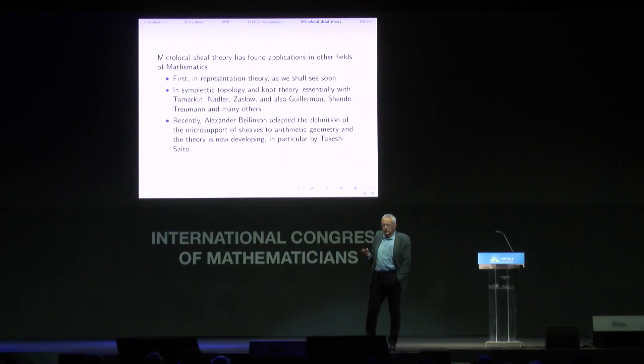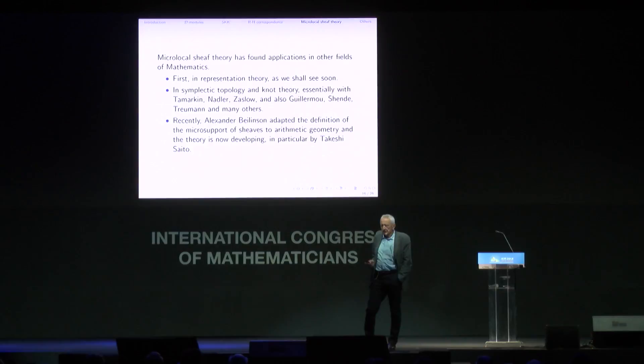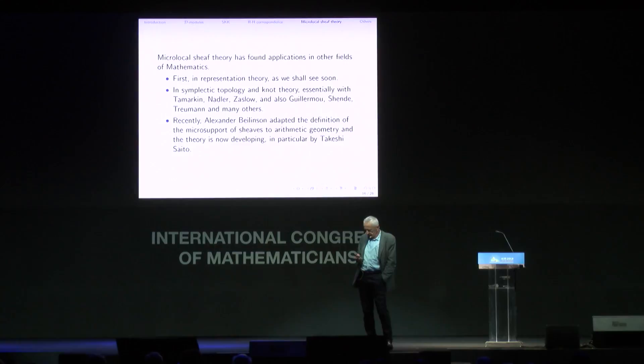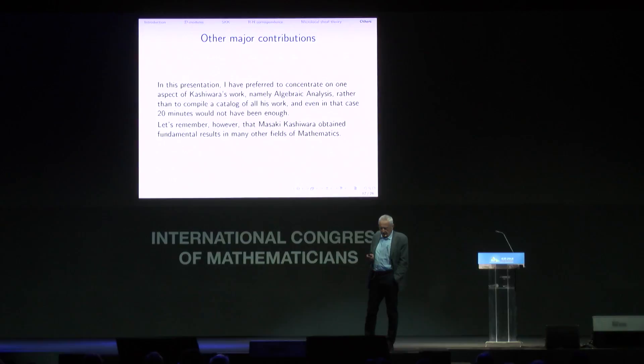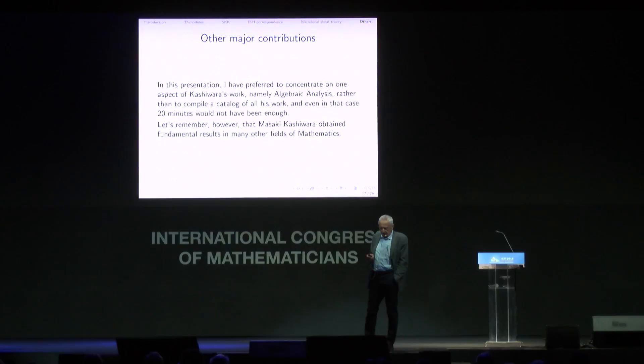Recently, Beilinson has adapted the definition of the microsupport — which is defined on real manifolds — to arithmetic geometry and algebraic varieties, and is developing a similar theory, in particular with Takeshi Saito. So until now I have essentially described Kashiwara's contributions to algebraic analysis, but he has done many other things, in particular in representation theory.